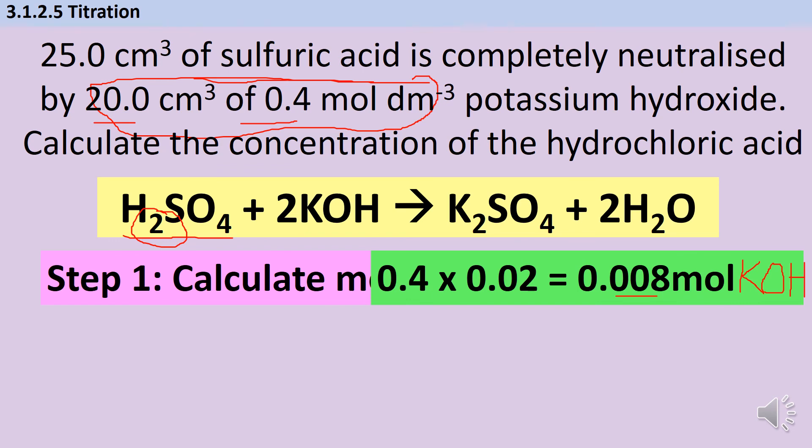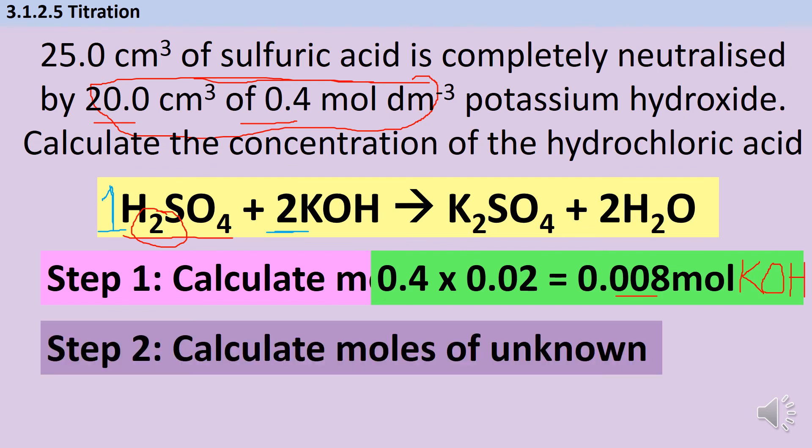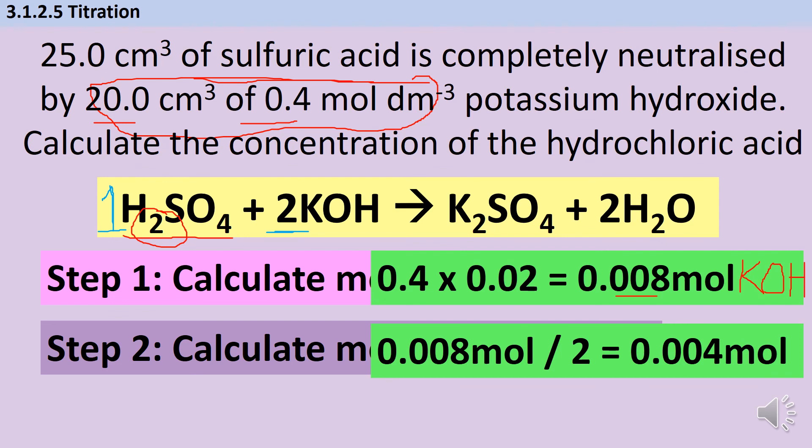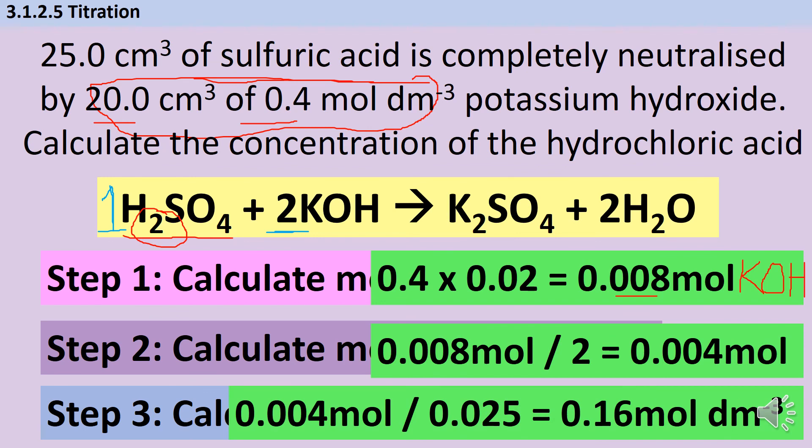My second step is to work out the number of moles of the other thing. So here I need my symbol equation. This tells me that for every two potassium hydroxides, I've got one sulfuric acid. So if I've got 0.008 moles of potassium hydroxide, I'm going to have half that amount of sulfuric acid, so I'm going to have 0.004 moles of sulfuric acid. Now that I have moles of sulfuric acid, I can go back to my old concentration calculation: moles divided by volume to work out my concentration. So I'm going to have my 0.004 moles of sulfuric acid divided by the volume from the question, which again I've had to convert to be dm³, and I get a final concentration of 0.16 moles per dm³.